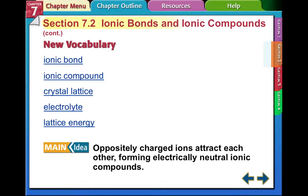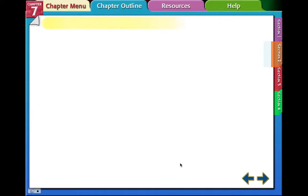New vocabulary: ionic bond, ionic compound, crystal lattice, electrolyte, lattice energy. Main idea: oppositely charged ions attract each other forming electrically neutral ionic compounds. You have to have a positive and you have to have a negative for it to come together to make a compound.